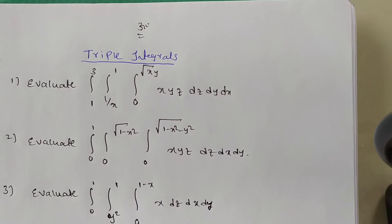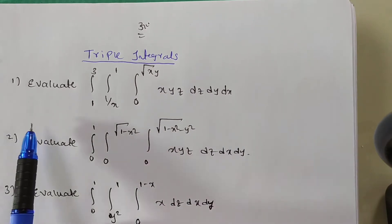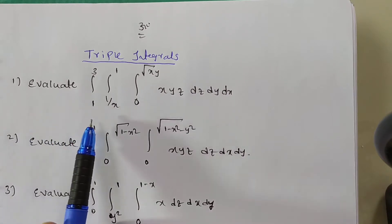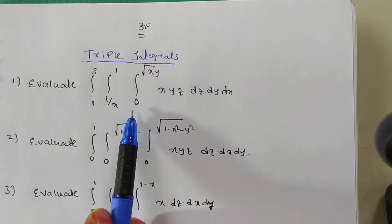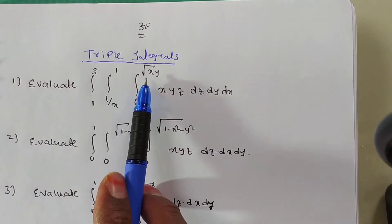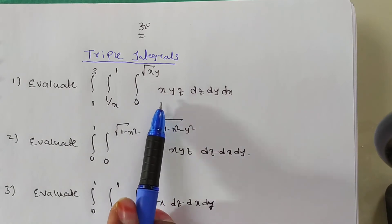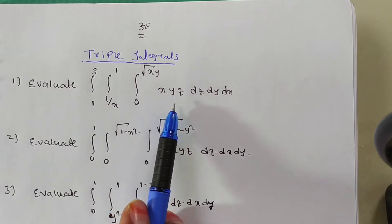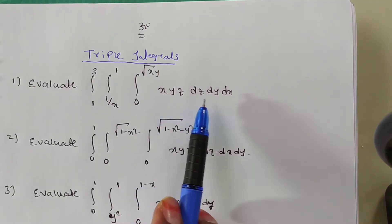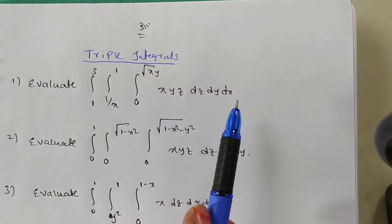First, they are given: evaluate integral from 1 to 2 to 3, limits 1/x to 1, 0 to square root of x, y. The integrand is x, y, z dz dy dx.